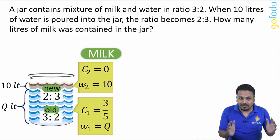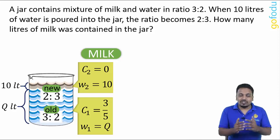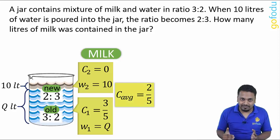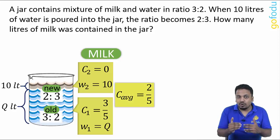Also, final milk water ratio after mixing is 2/3. So final milk proportion or C_average is 2/5 which going percent wise can be written as 2/5 × 100, that is 40%.